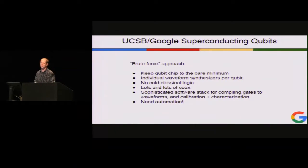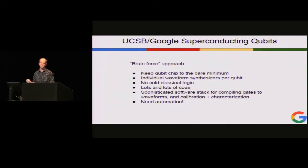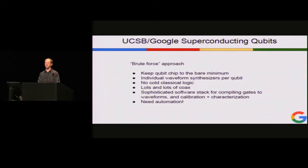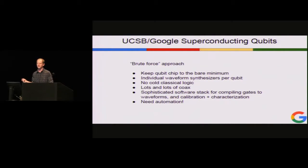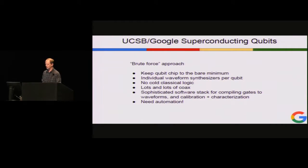We've built a sophisticated software stack that takes a gate sequence from a theorist and automatically turns it into the correct waveforms and does all the calibration. The conventional approach is a grad student sitting down measuring qubit frequencies and writing them down — that works for three to ten qubits, but these things drift faster than grad students can calibrate them. We need automated calibration; you need more and more parameters for more accurate control. Grad students are not scalable — that was the first thing we needed to solve.